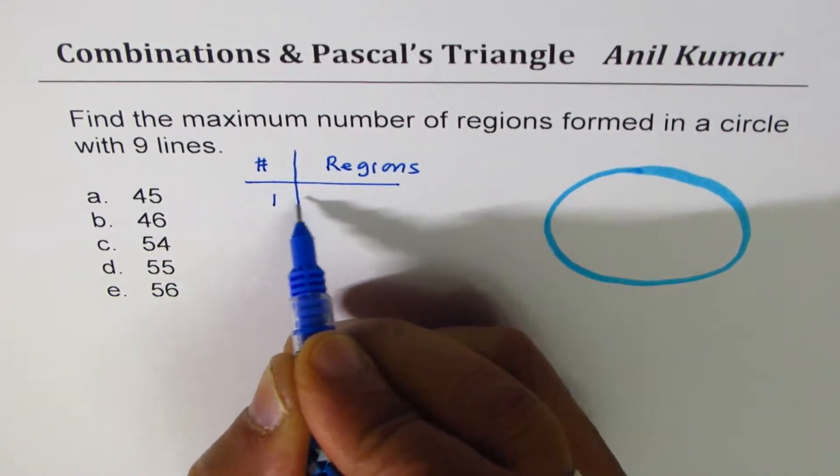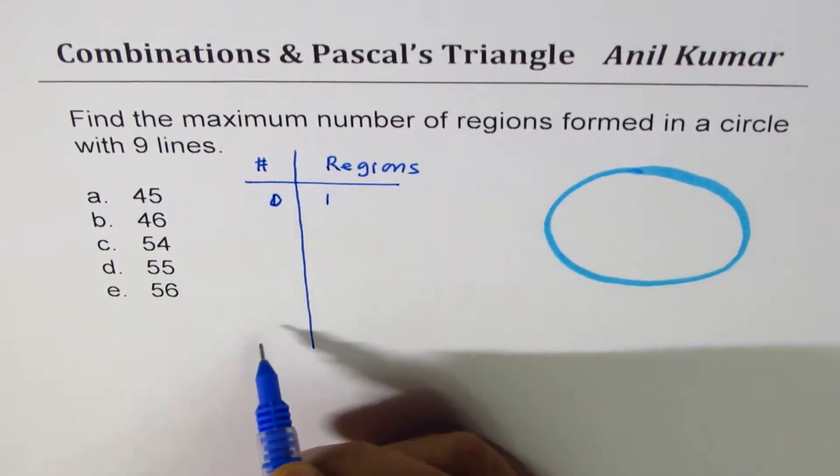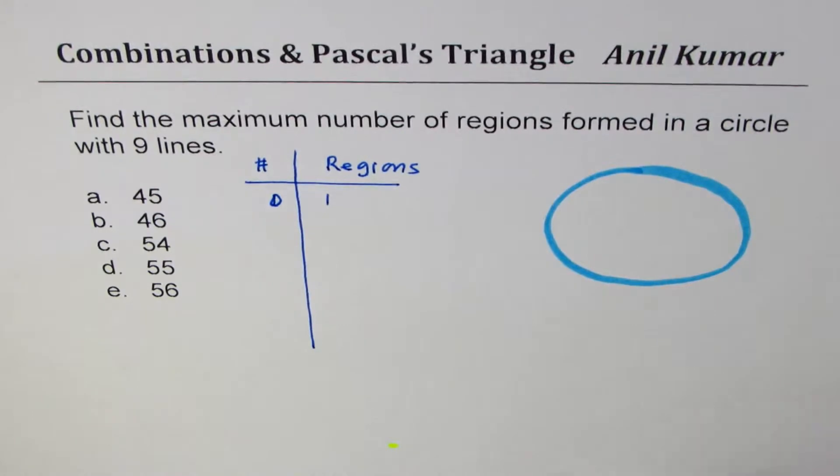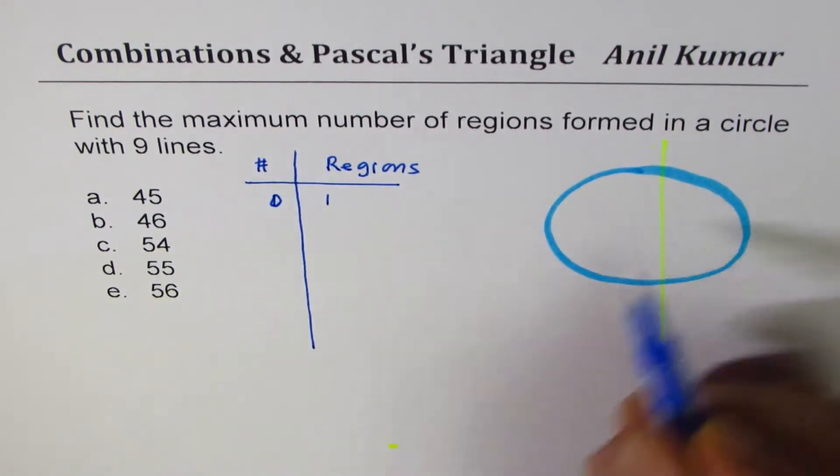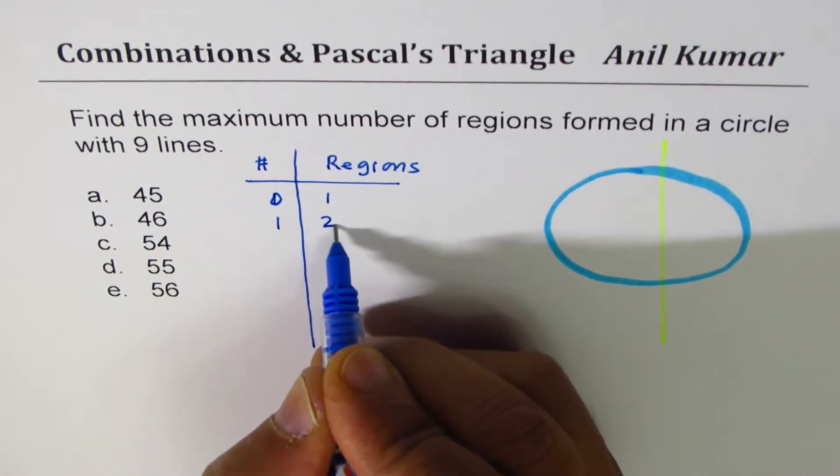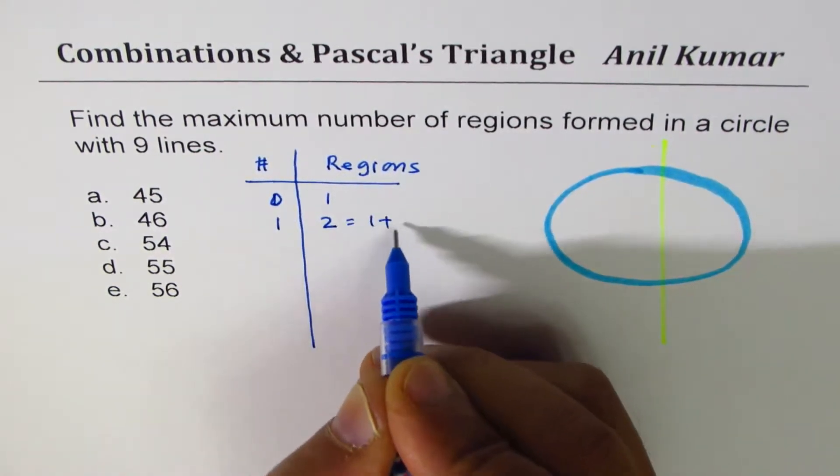If you do not draw any line, we already have zero lines, one region. As soon as you draw a line, it divides it into two. So one line gives you two, which is one plus one.